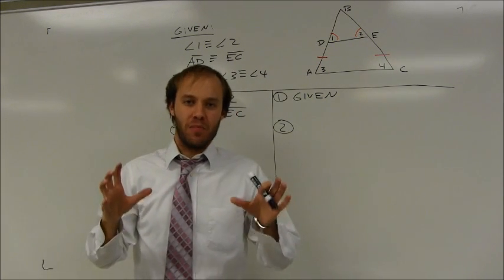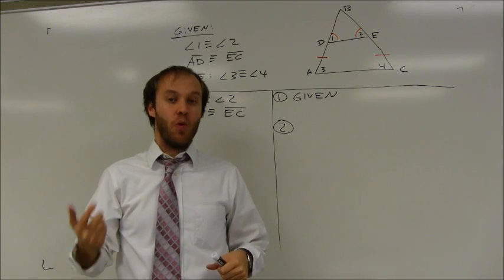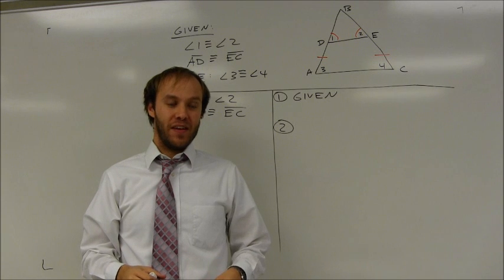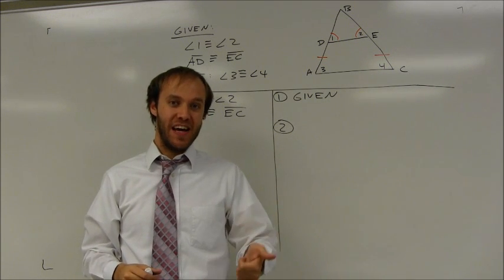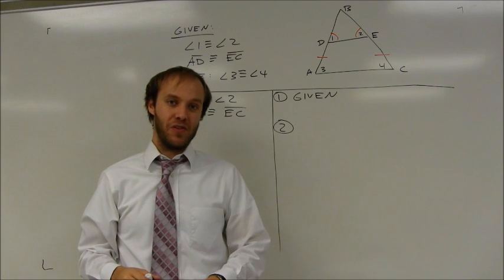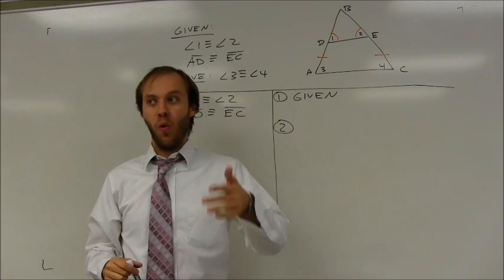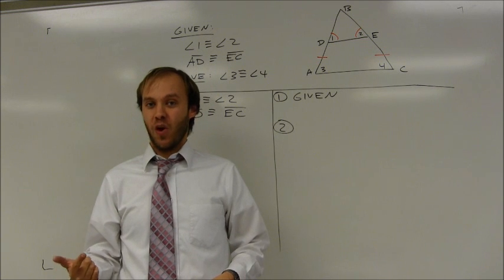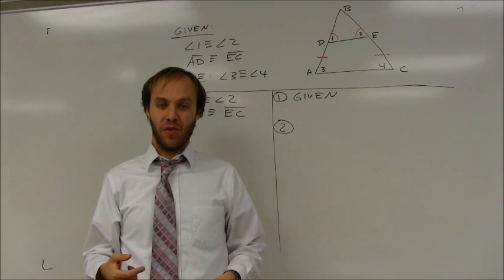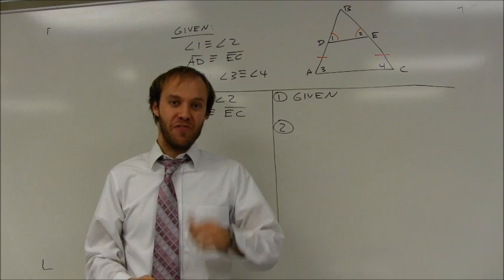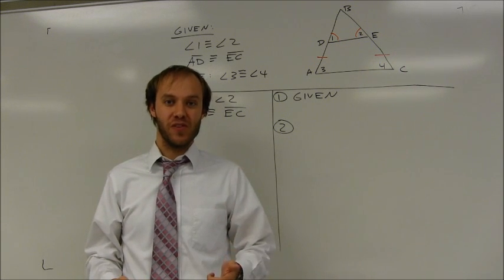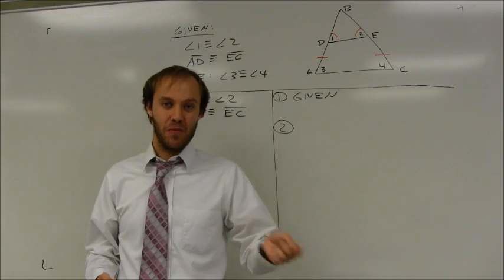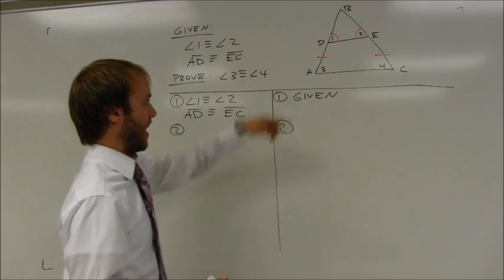An unbelievably important idea in this chapter is one of the important properties of isosceles triangles. We know that if triangles have two congruent sides, they also have two congruent opposite angles. Or, conversely, if they have two congruent angles, we know that they have two congruent opposite sides. The first thing you should do if you see two congruent sides or two congruent angles in a triangle is to fill in the other pair of corresponding congruent angles or sides.